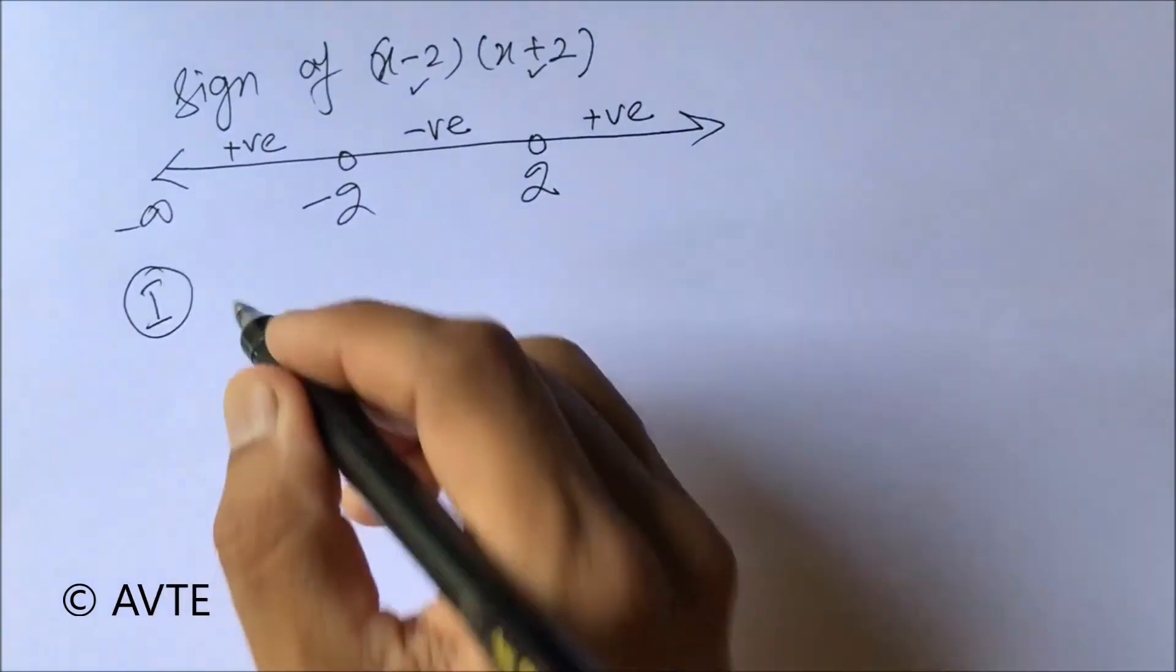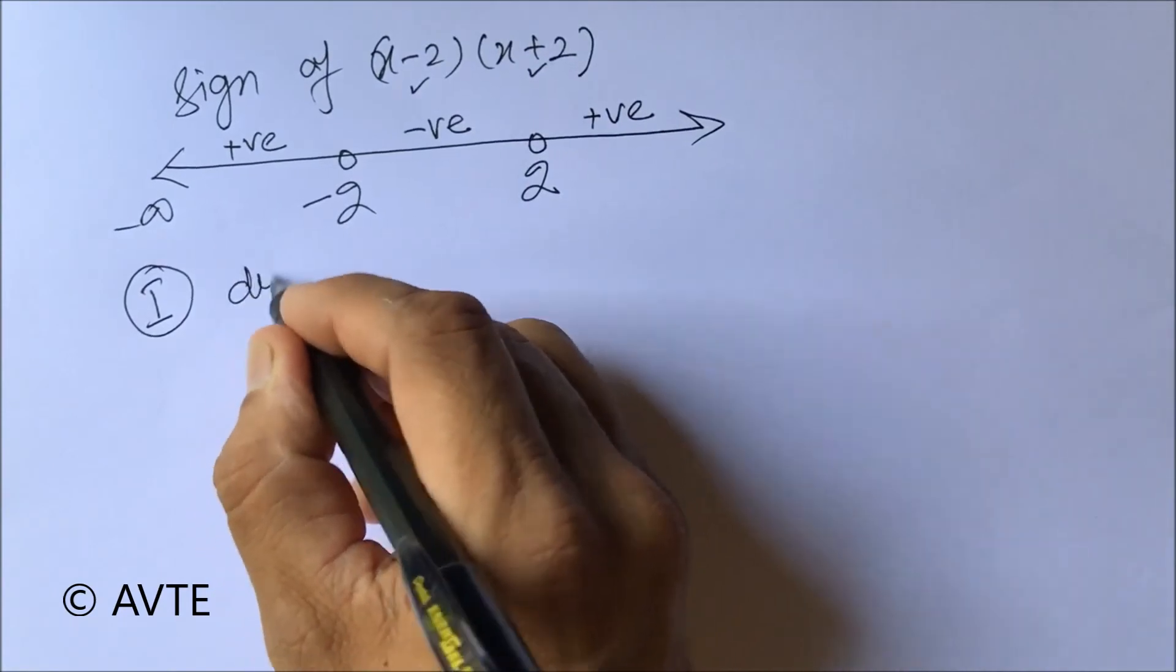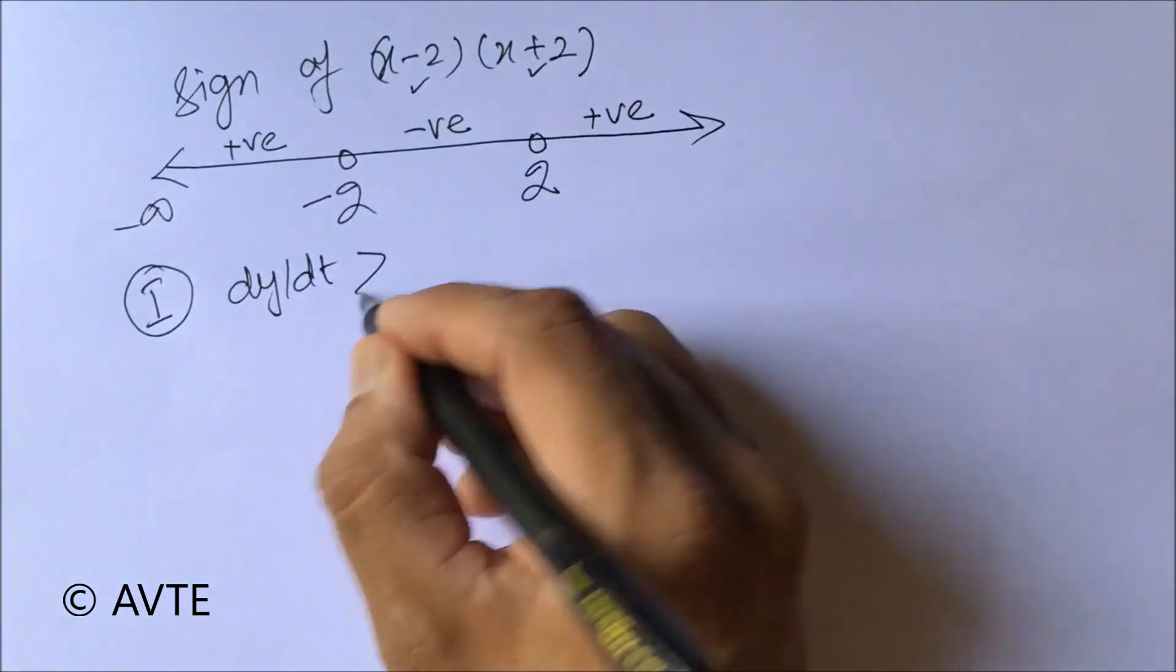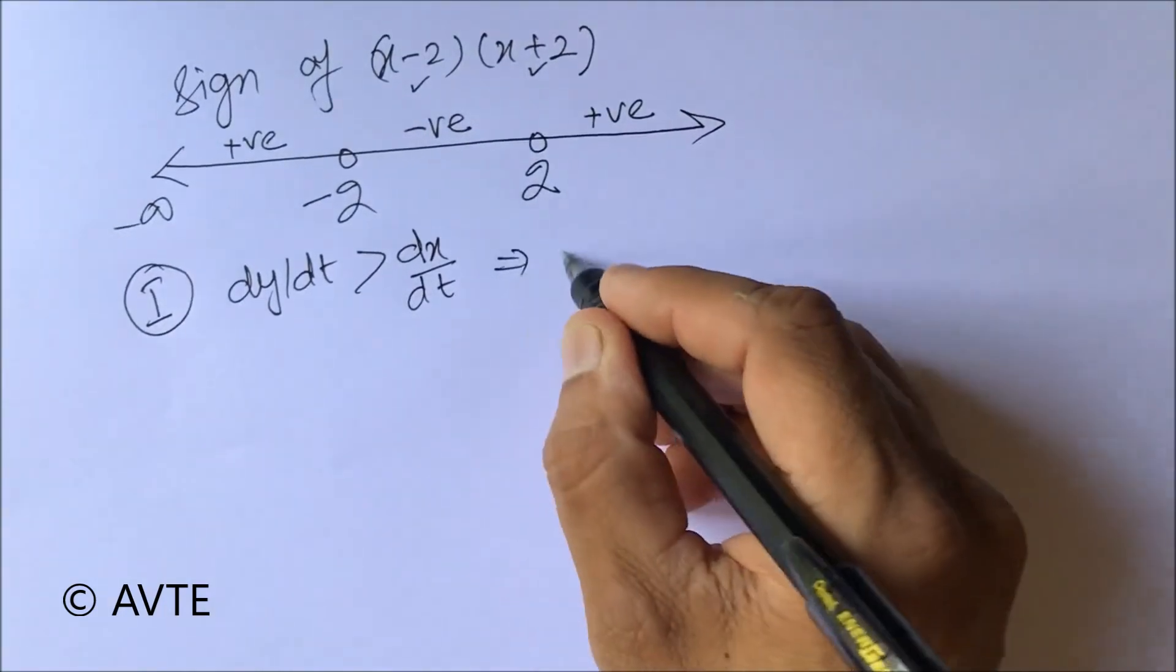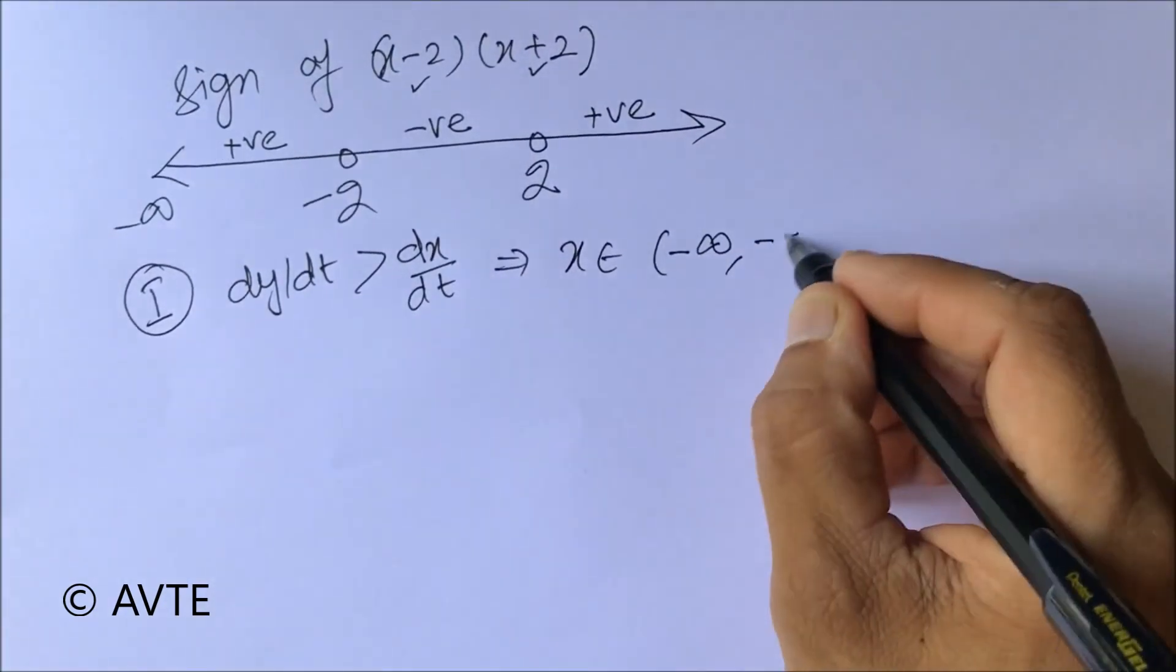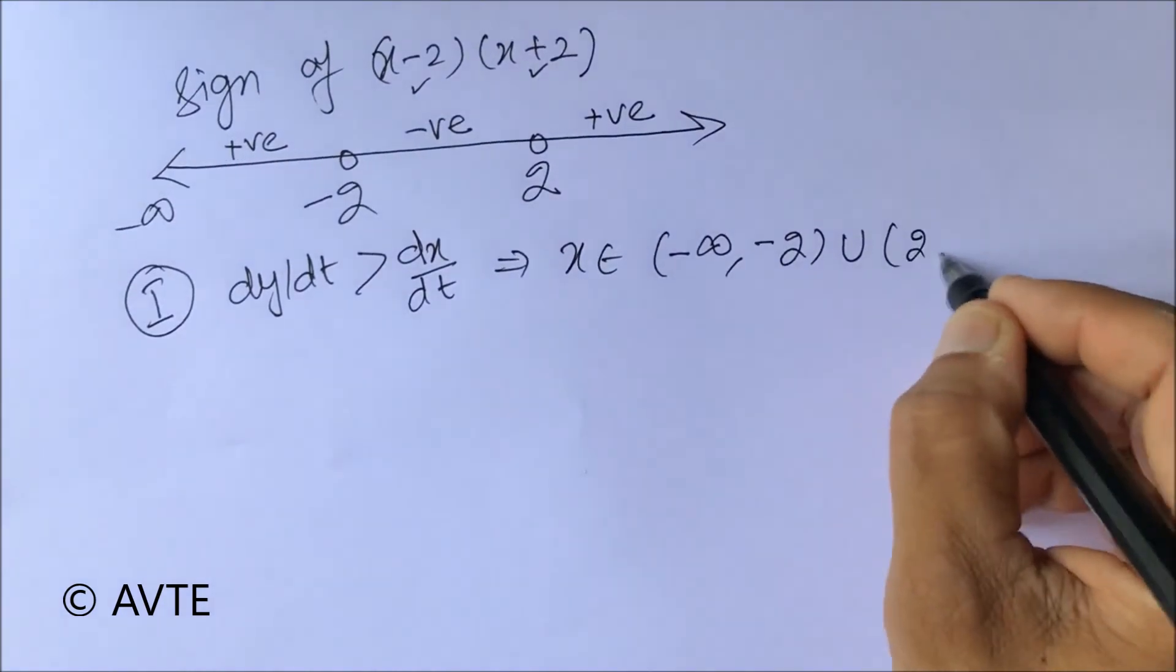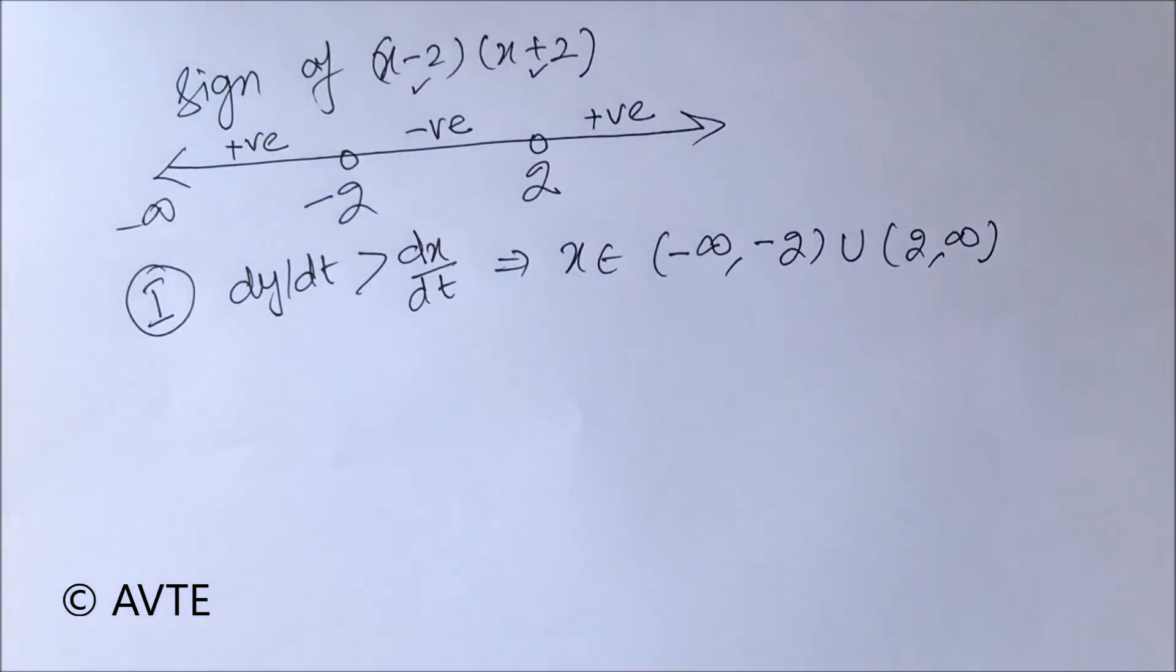For case one, where dy/dt, that is y coordinate, was changing faster than x coordinate, this will be the situation. When x will be minus infinity to minus 2, union 2 to infinity, all open, then the y component will change faster than x component.